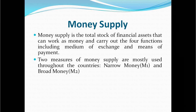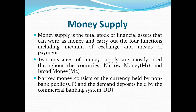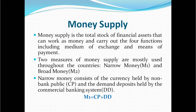Two measures of money supply are mostly used throughout economies. They are narrow money supply, called M1, and broad money supply, which is M2. Narrow money supply consists of currency held by the non-bank public and checkable deposits — called demand deposits — held by the commercial banking system. Thus, M1 equals currency with public (CP) plus demand deposits (DT).